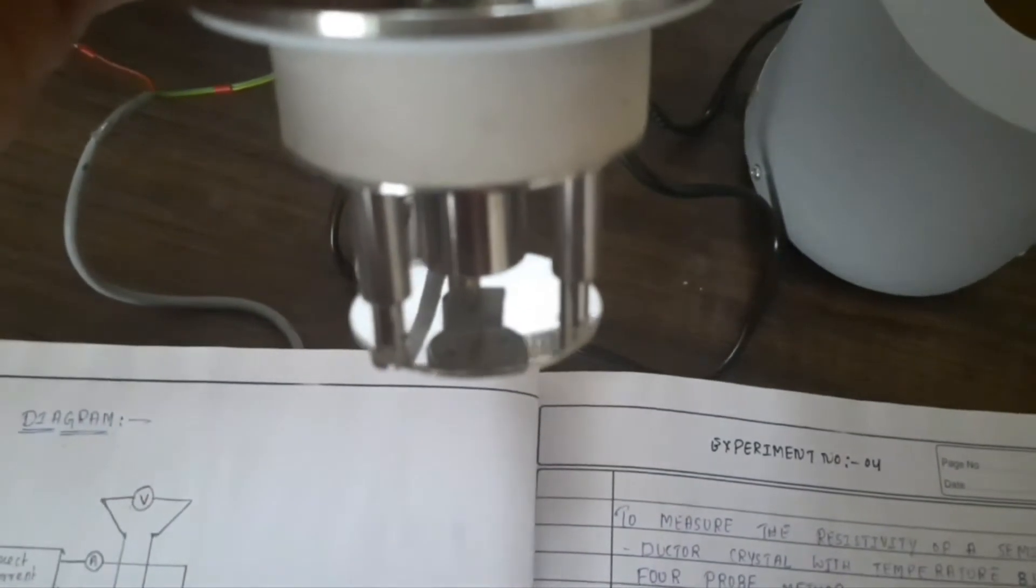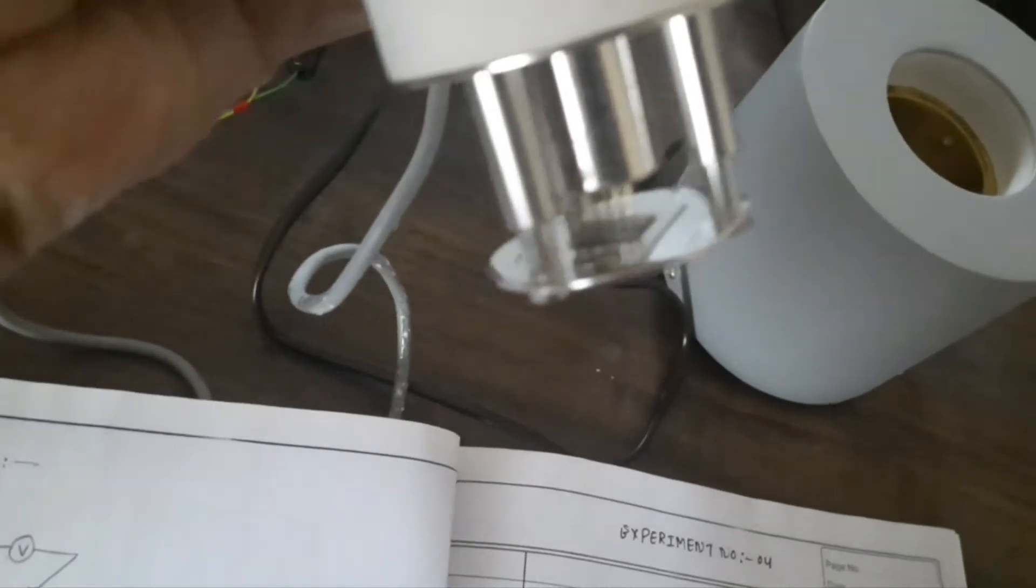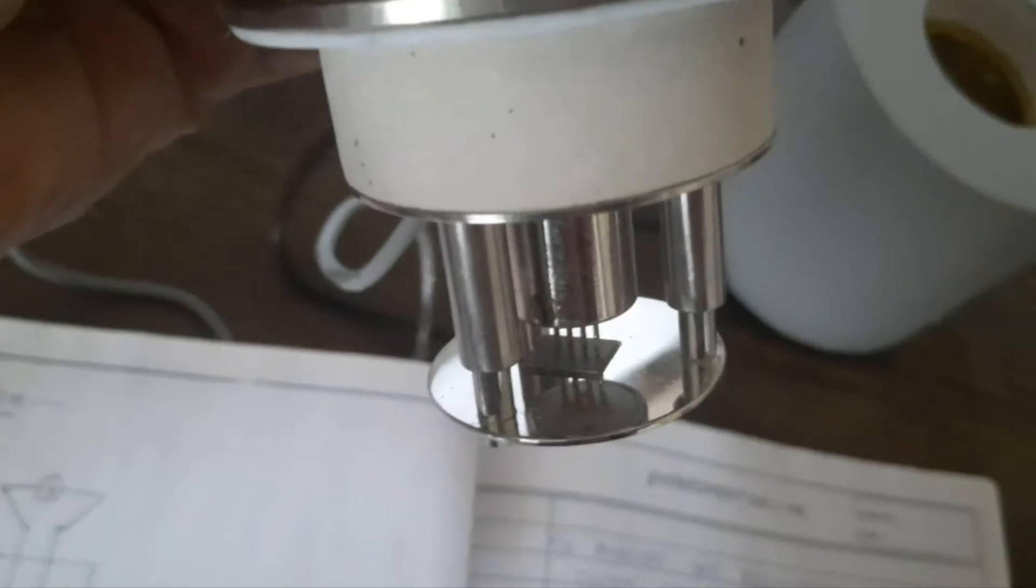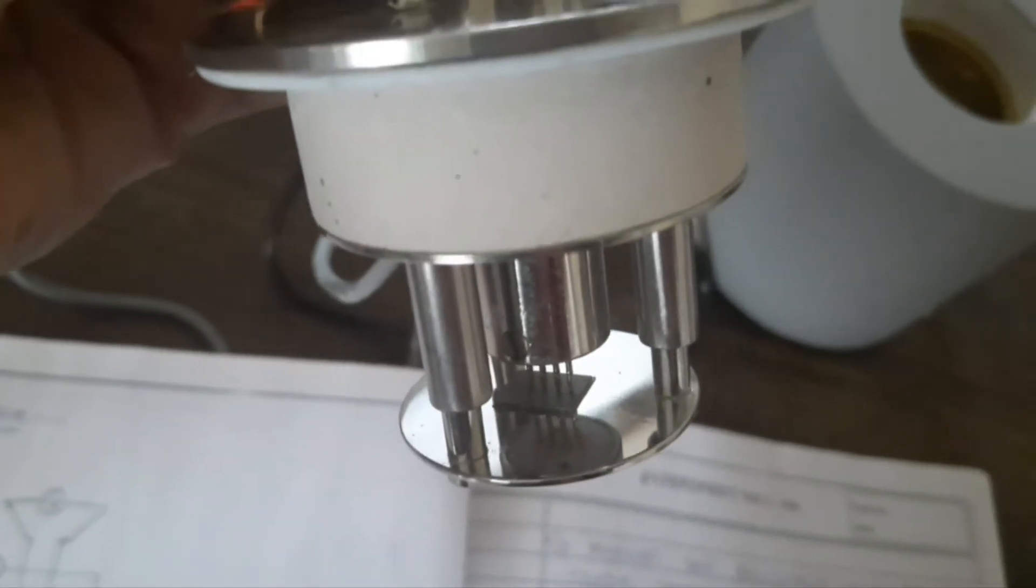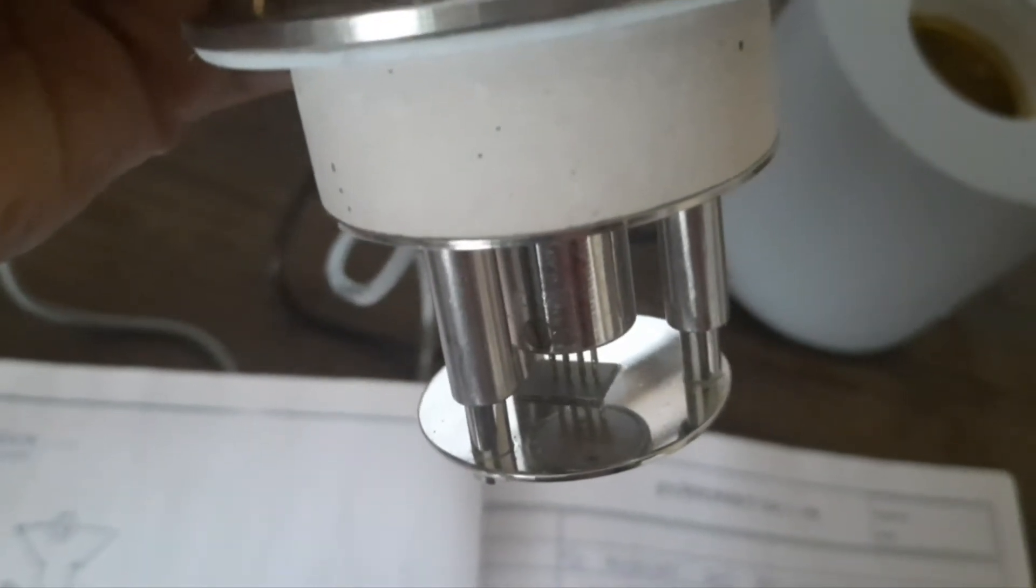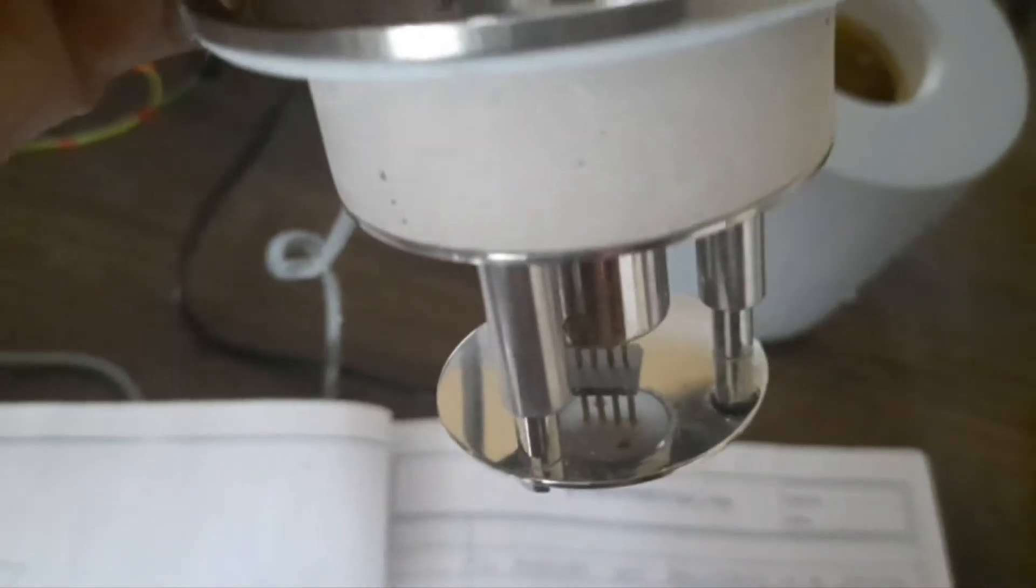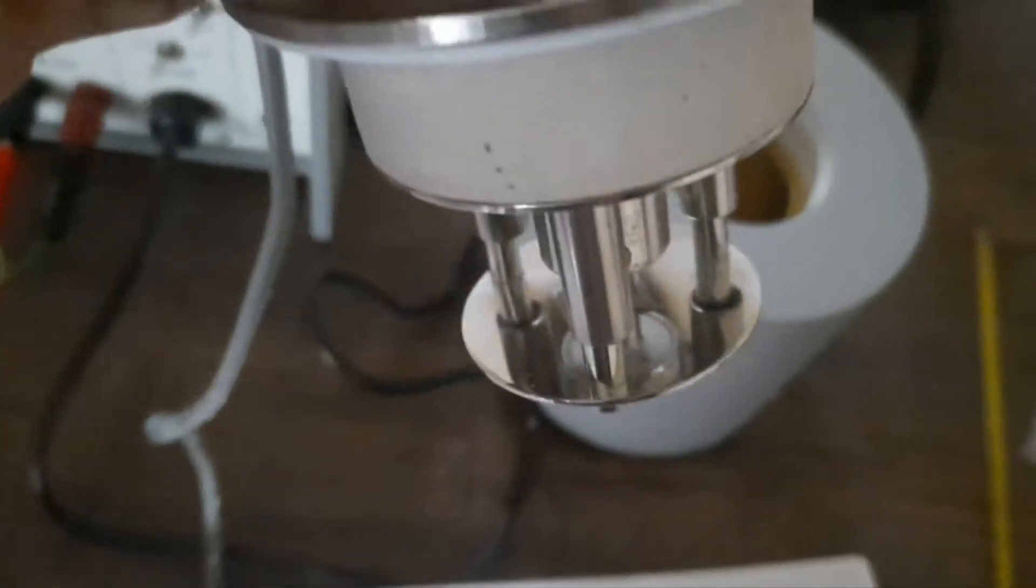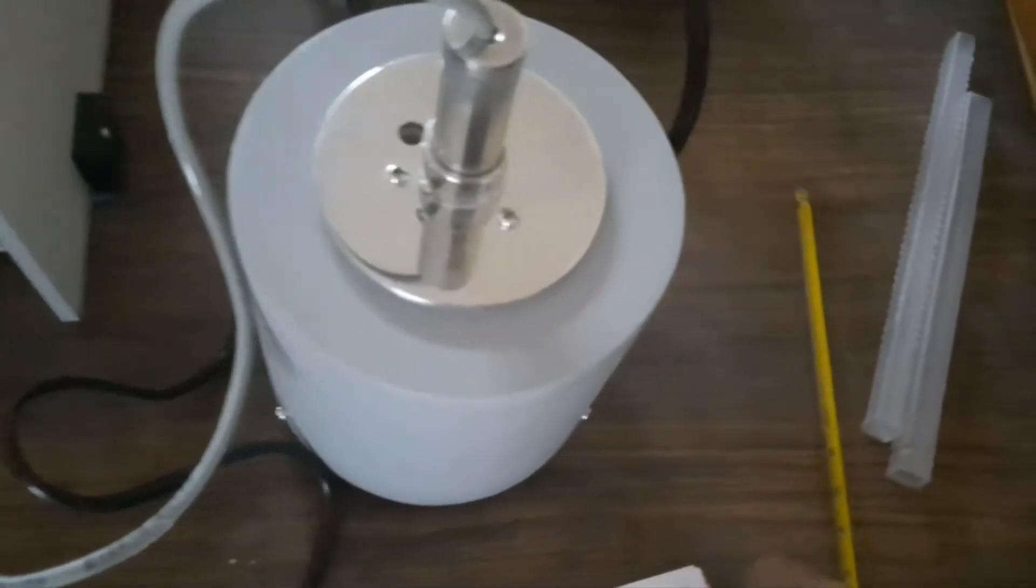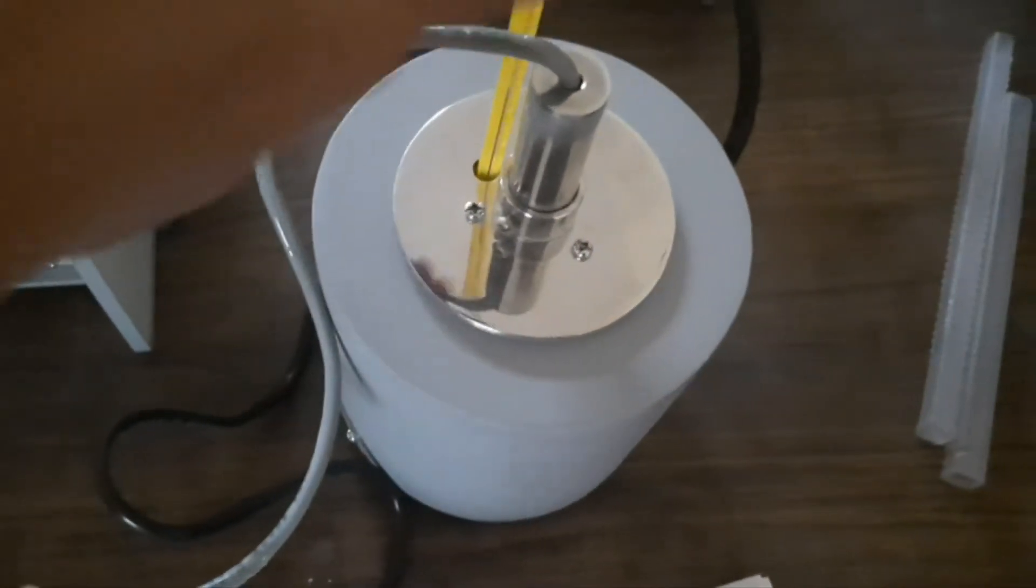Here is the 4-probe. The germanium sample or germanium crystal has been attached to the 4-probe. The thickness of this germanium sample, the thickness of the crystal is 0.05 mm, and the distance between the probes is 2 mm or 0.2 cm. We have to keep this 4-probe attached to the germanium crystal inside the oven and then fix the thermometer to measure the temperature.